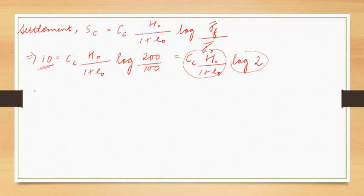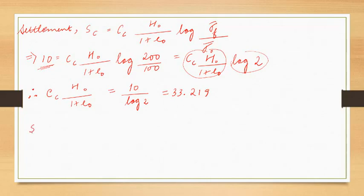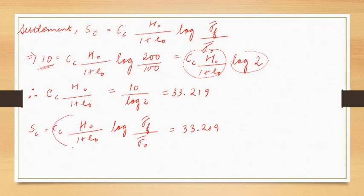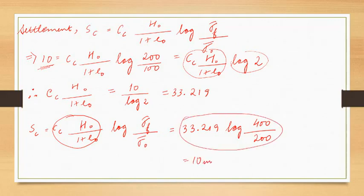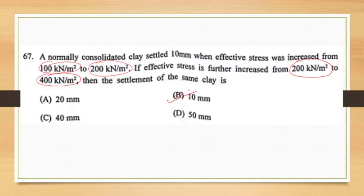To verify: from the first case we get (c_c × h₀) / (1 + e₀) = 10 / log 2 = 33.219. For the second case, s_c = 33.219 × log(400/200) = 33.219 × log 2 = 10 mm. So the answer is option B, that is 10 mm.